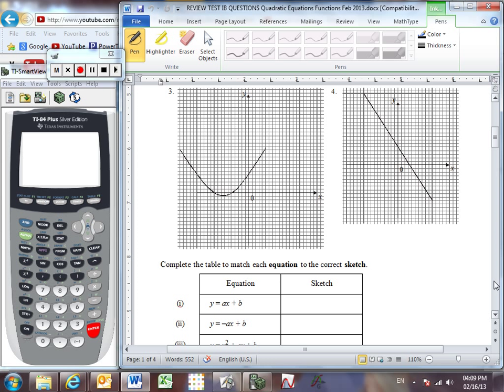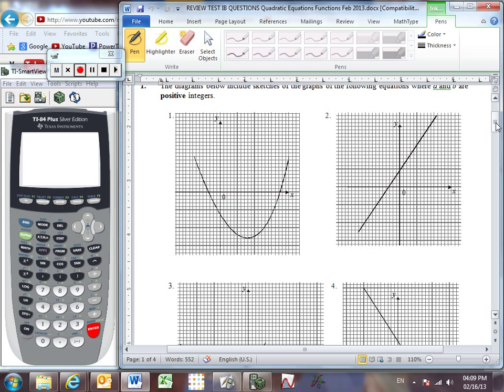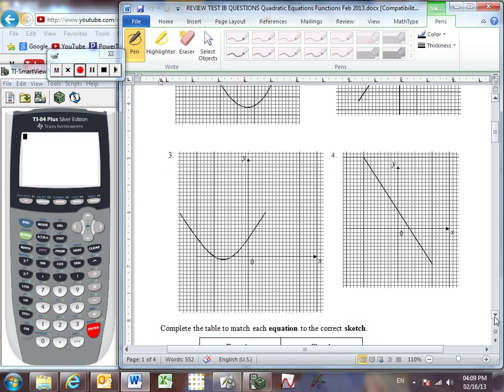Clearly, two of them are parabolas and two of them are lines. We need to match the diagrams with these equations at the bottom. It tells us right at the very beginning that a and b are positive integers. So let's look at this very first equation. This is clearly in the form of a linear equation. Remember that a, which represents the slope here, the coefficient of x, mx plus b, so a is your slope. a is a positive number, which must mean that we have a positive slope. And so, which line has got a positive slope? It's clearly graph number two. And so, our answer here is graph number two.